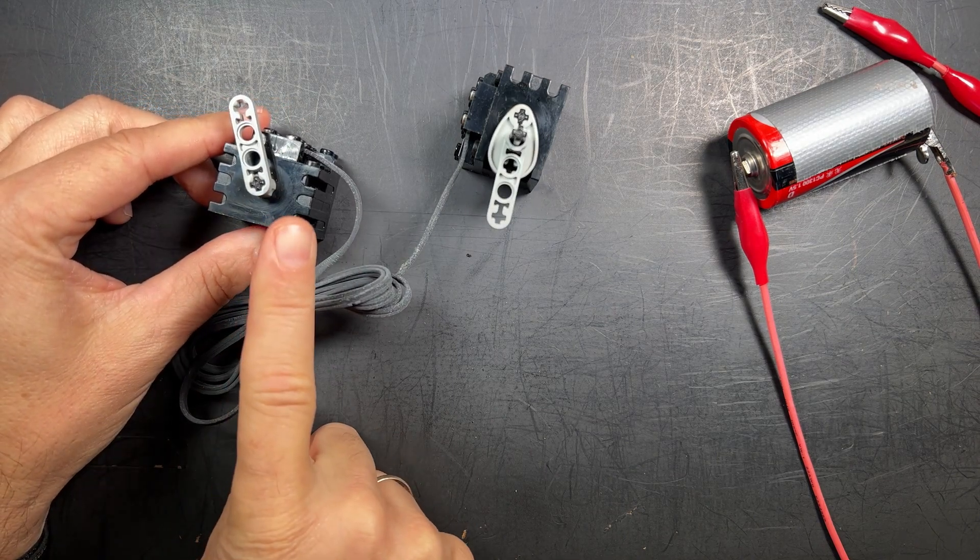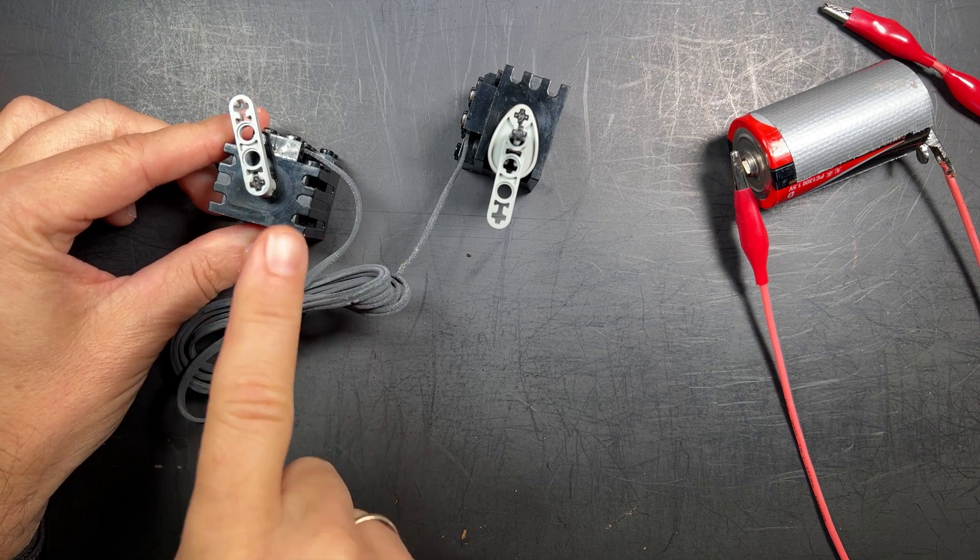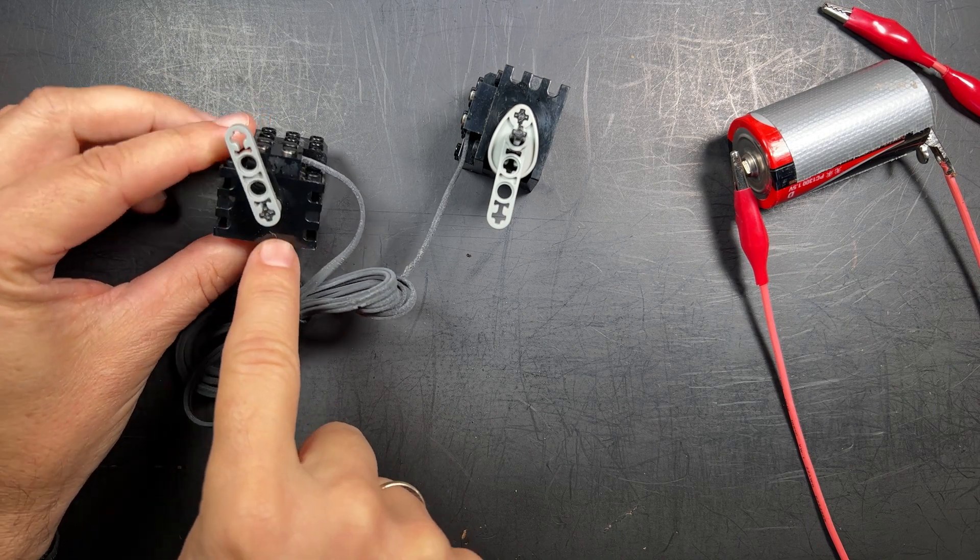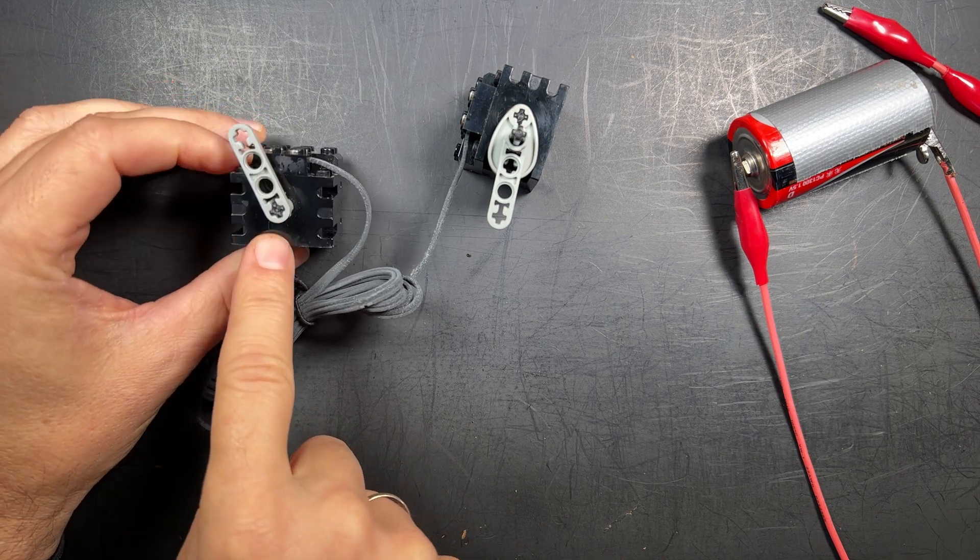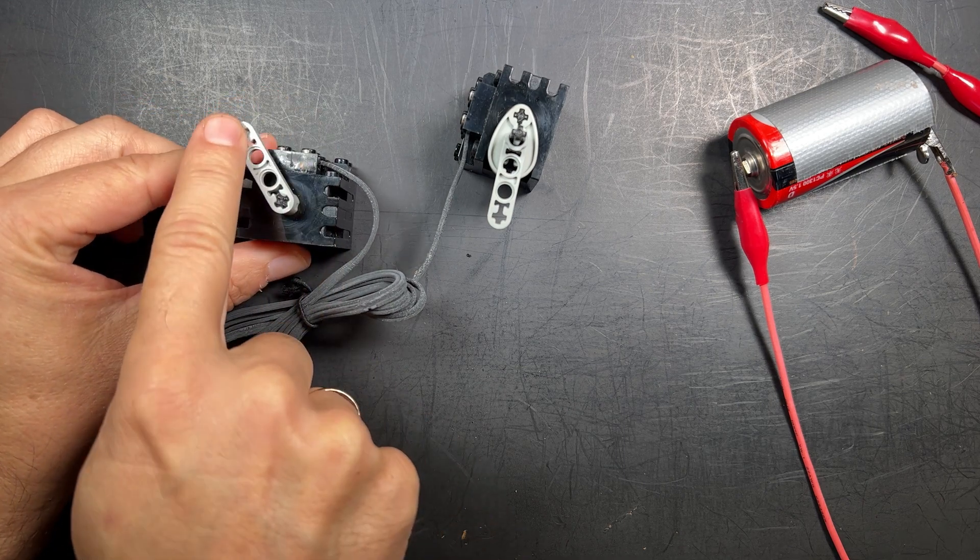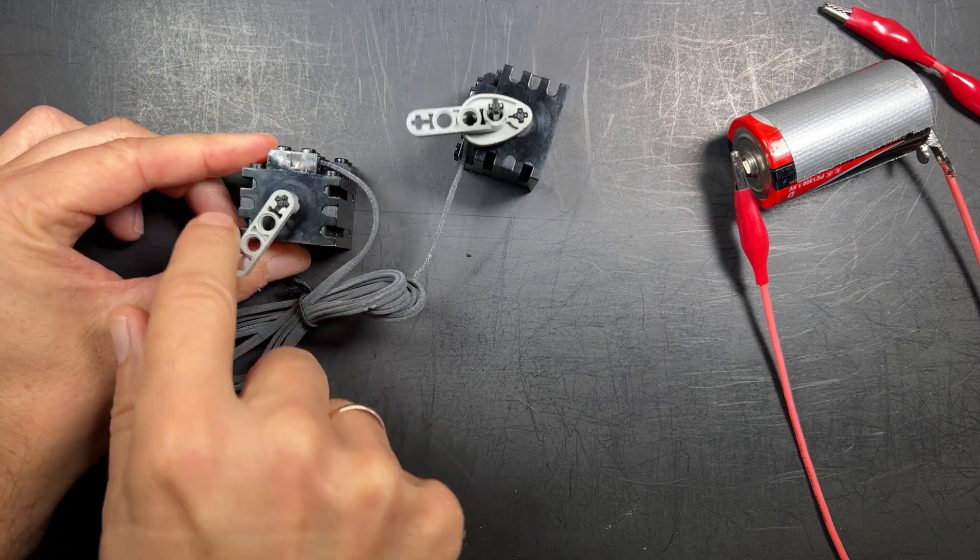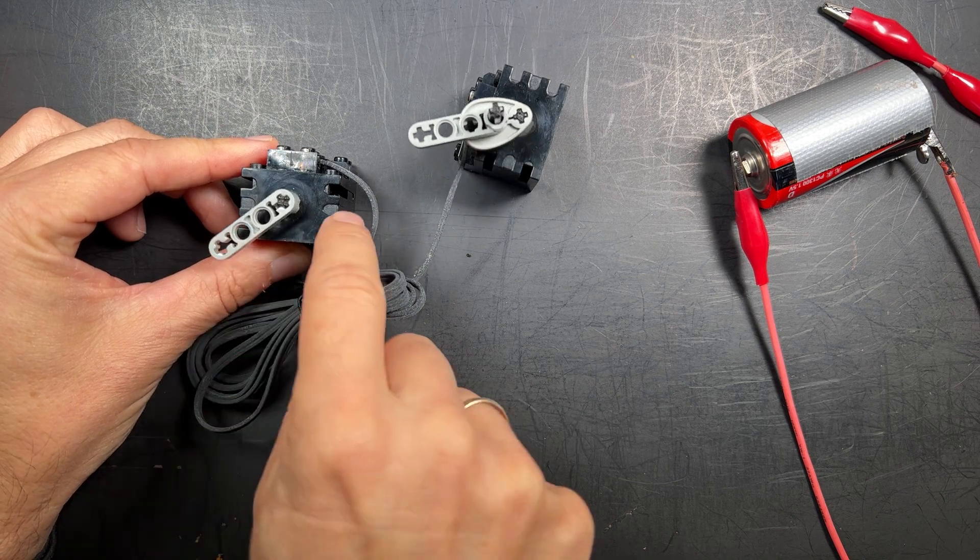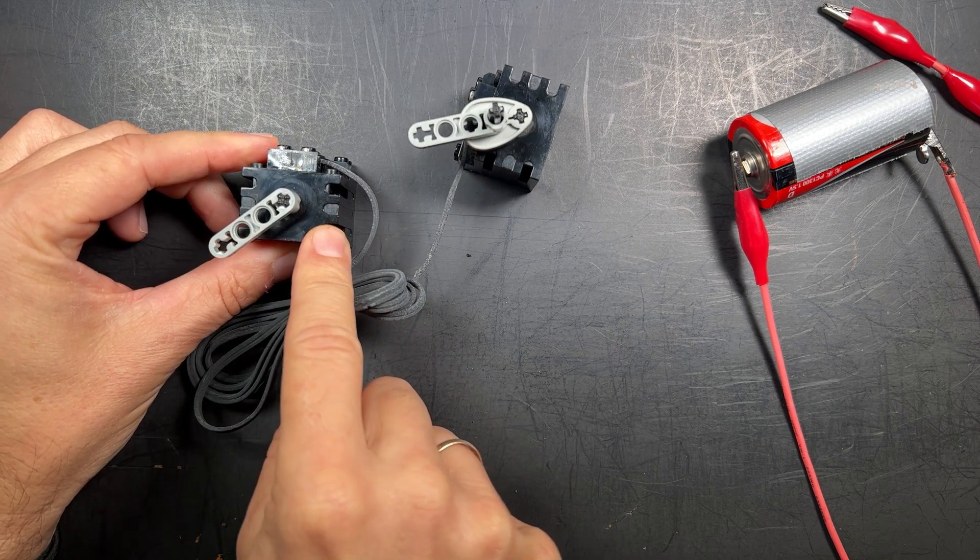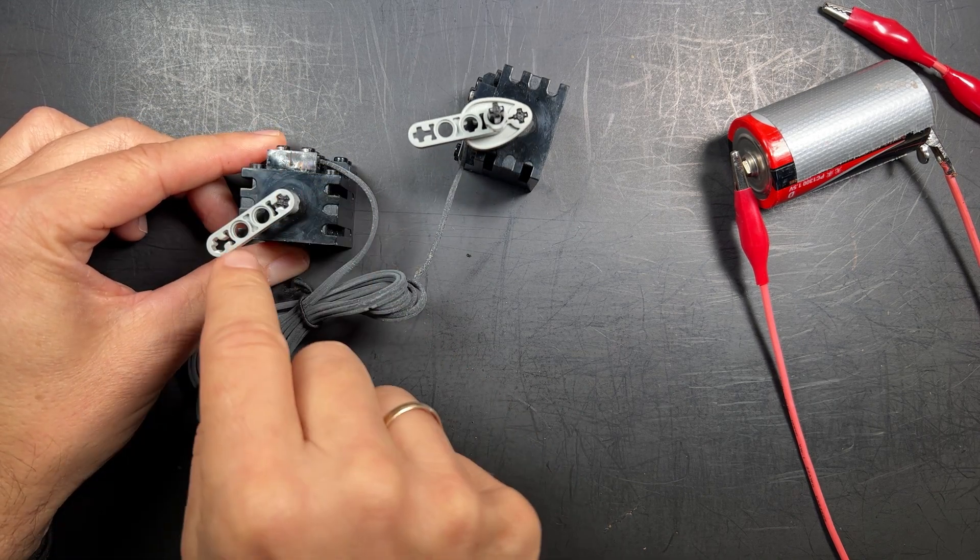If you just take a normal motor, it's not going to work because you need to spin the motor very fast. This Lego motor has a gear inside there. You can hear it. And so when I spin this, the motor actually is spinning pretty fast. It's just the gears slow it down.